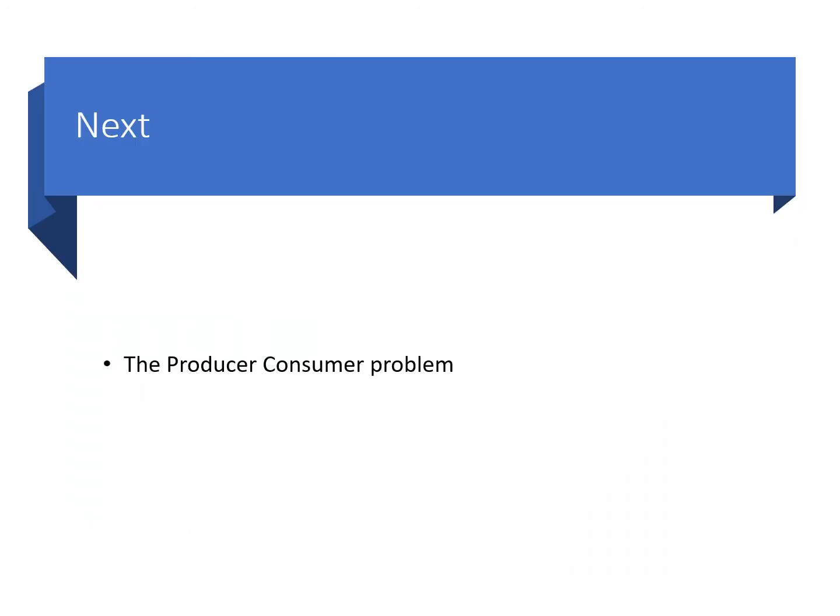That's the end of the discussion on deadlock. Next, we'll talk about a problem called the producer-consumer problem, which is a really common pattern and solution within multi-threaded systems.